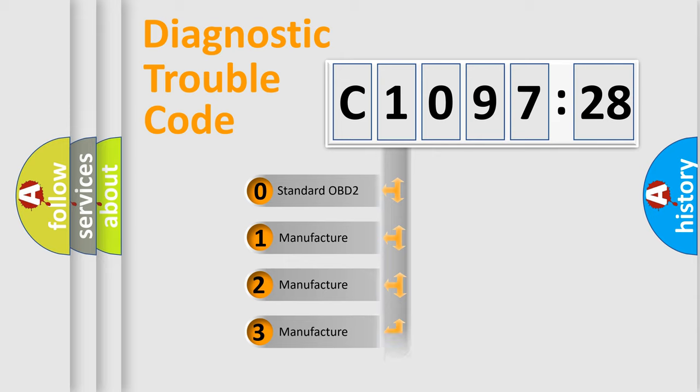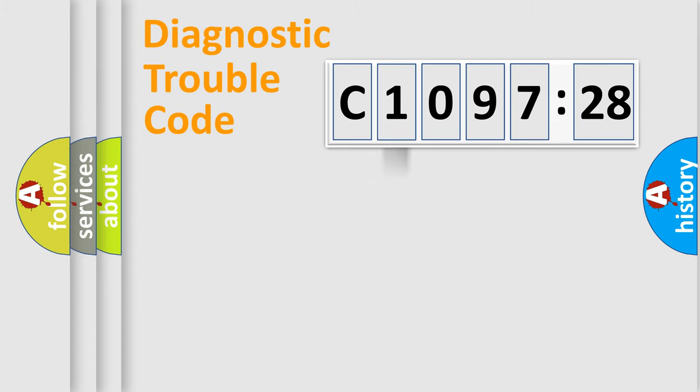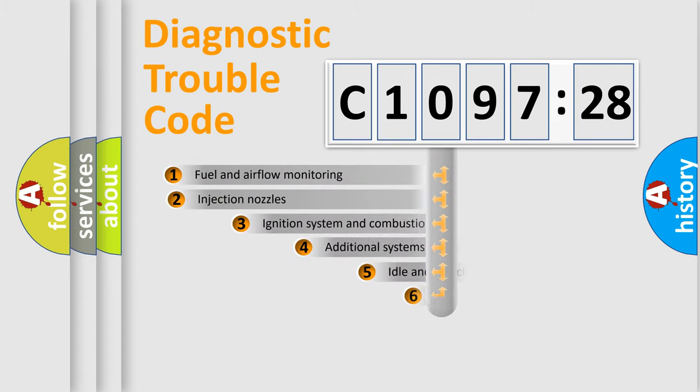If the second character is expressed as zero, it is a standardized error. In the case of numbers 1, 2, or 3, it is a more specific expression of the car-specific error.